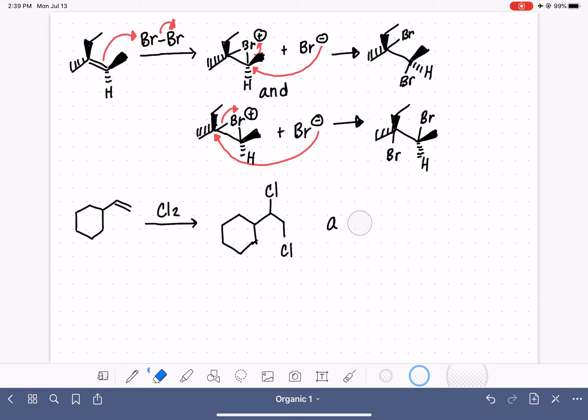If only one of our carbons is chiral, that just means that we're going to make a pair of enantiomers, one where the chlorine is on a wedge and one where the chlorine is on a dash. That's going to be the easiest way for us to represent the two products of this reaction.